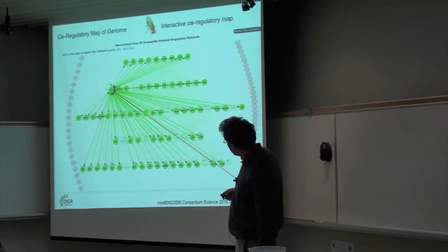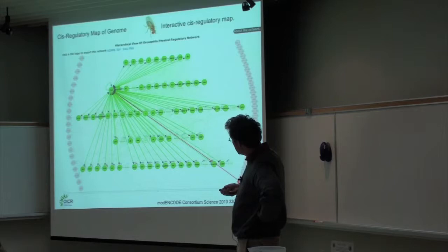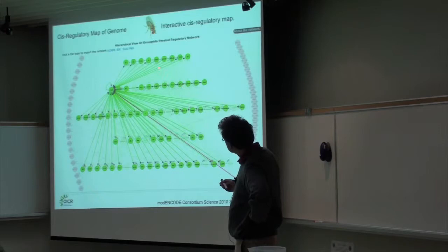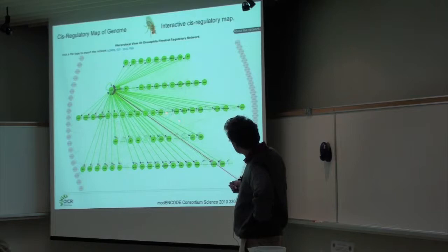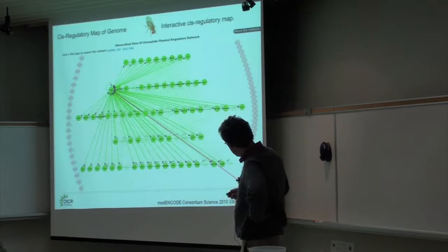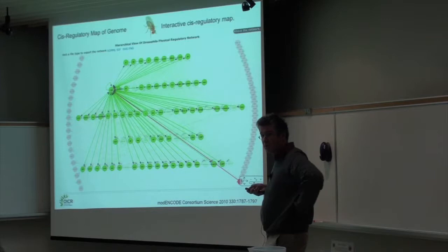From the transcription factor binding data and microRNA sequencing and binding site characterization, the worm and fly analysis groups built up regulatory maps. This is a display developed by the Data Coordinating Center showing transcription factors, their regulatory relationships, and microRNAs. As you mouse over different parts, it highlights the positive and negative regulatory relationships and lets you explore deeply. This uses Gary Bader's Cytoscape web software, which is a wonderful piece of software for display.